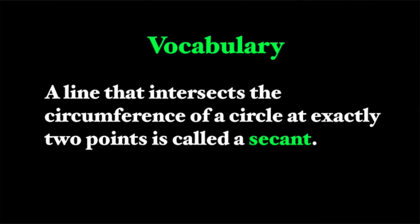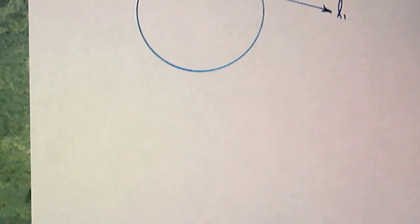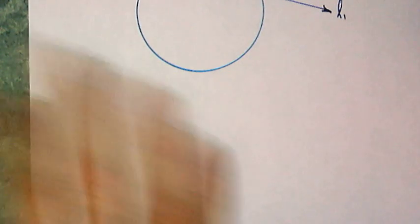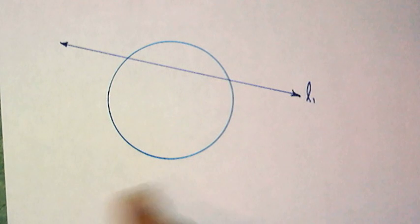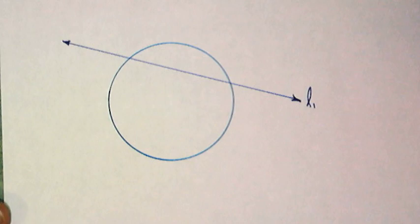A line that intersects the circumference of a circle at exactly two points is called a secant. I have drawn a secant here, and now l1 is a secant. Not too difficult to understand.